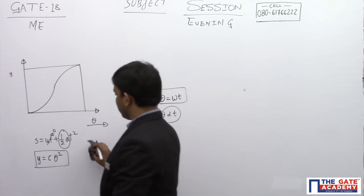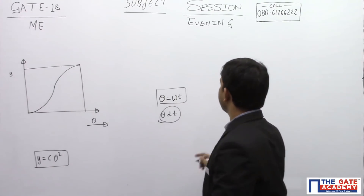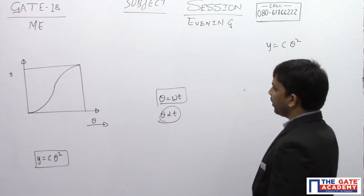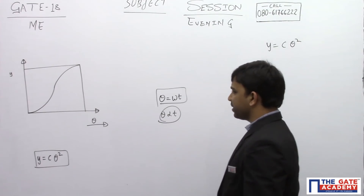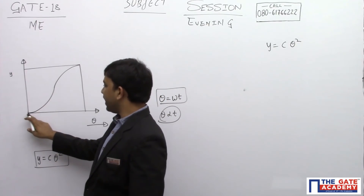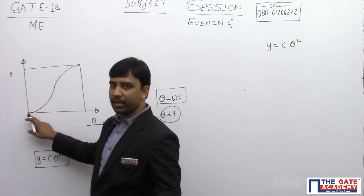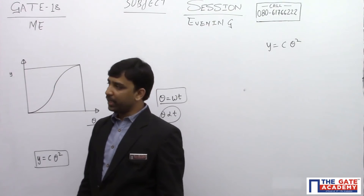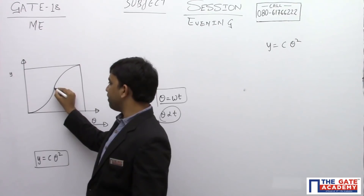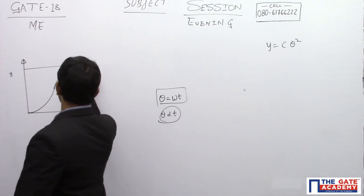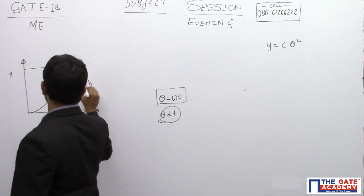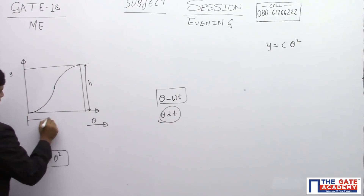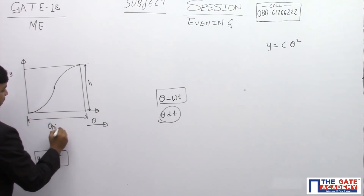For the cam-follower mechanism with parabolic motion, displacement is some constant times theta squared. I want to find the maximum velocity of the follower. During the first half of the motion there is uniform acceleration, so velocity continuously increases. In the second half there is uniform deceleration, so velocity decreases. The total distance traveled by the follower is called lift, denoted h, and the total angle rotated by the cam for the raise is theta_ri — given as delta in this problem.